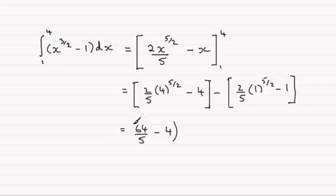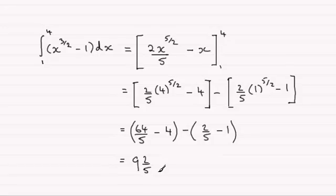And then from this we subtract, well 1 to the power 5 over 2 is still going to be 1. Square root of 1 is 1, 1 to the power 5 is 1. So you've got 2 fifths there minus the 1. And when you work this out, very easy, you'll see that it comes to 9 and 2 fifths.